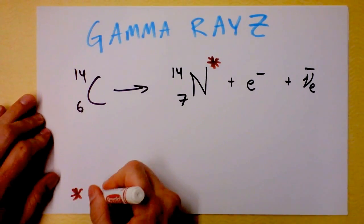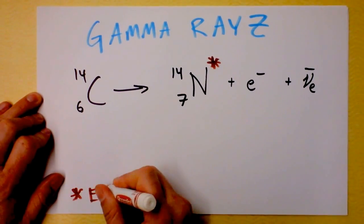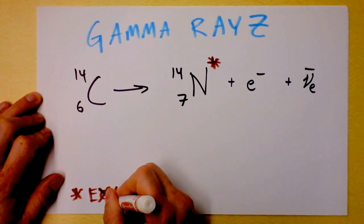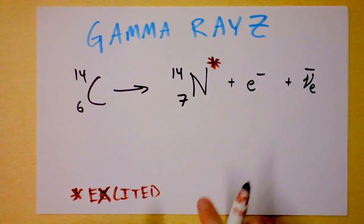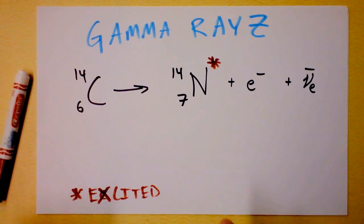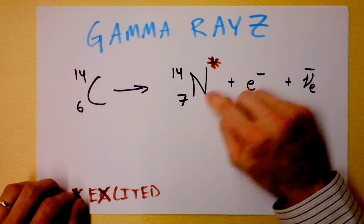And the asterisk means it's excited. I'm going to spell it right even. It's excited because it's not in its ground state. What did you just say? Yes, I said it's not in its ground state.